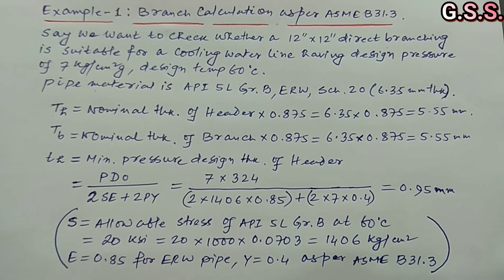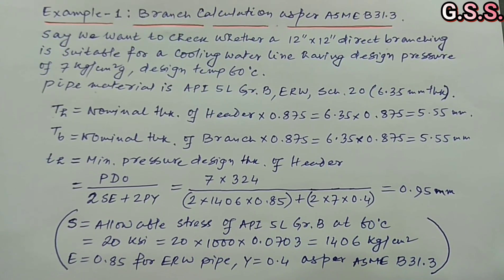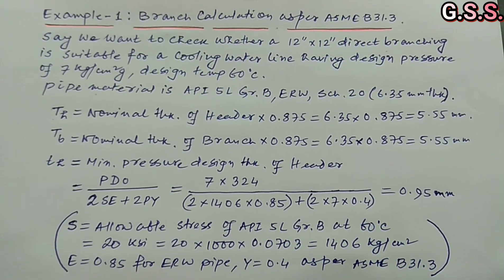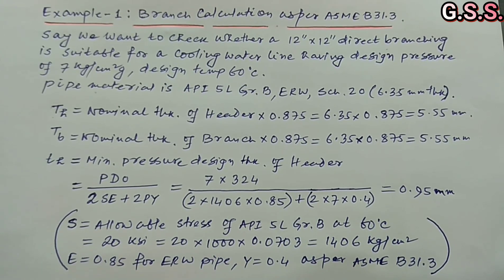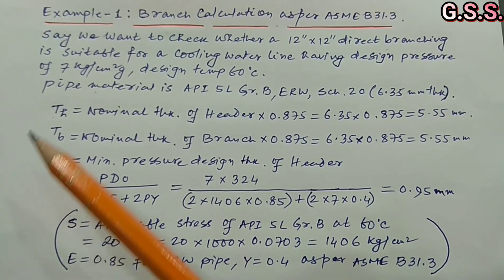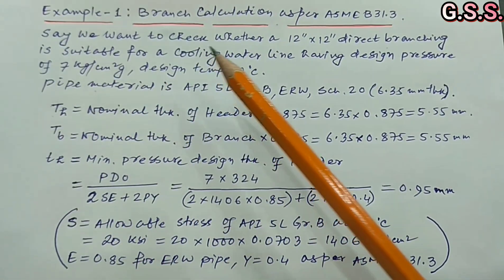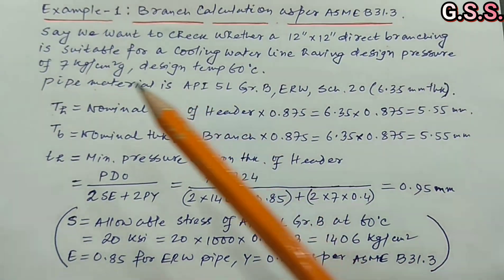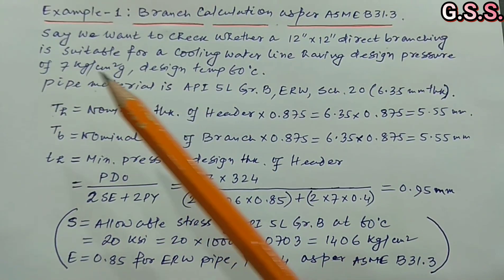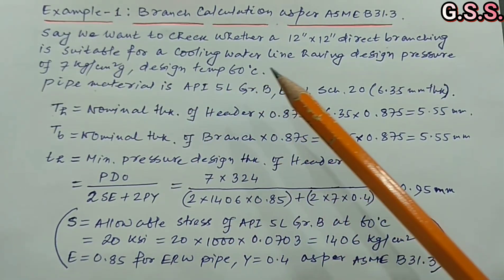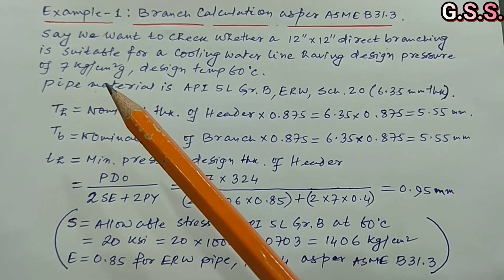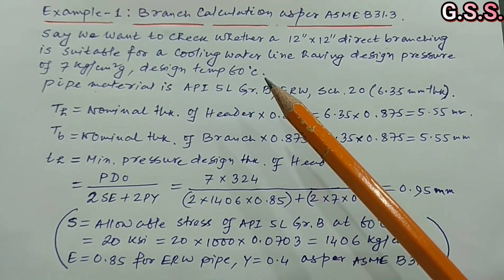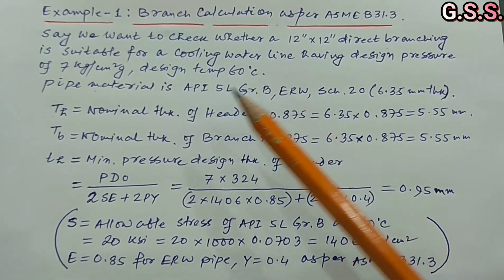Now we will take a few examples of branch calculation as per ASME B31.3. We want to check whether a 12-inch by 12-inch direct branching is suitable for a cooling water line having a design pressure of 7 kg/cm² gauge and a design temperature of 60°C.